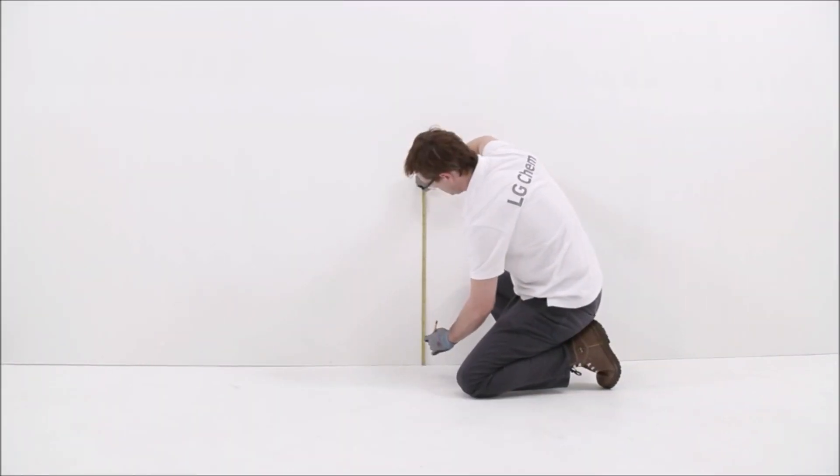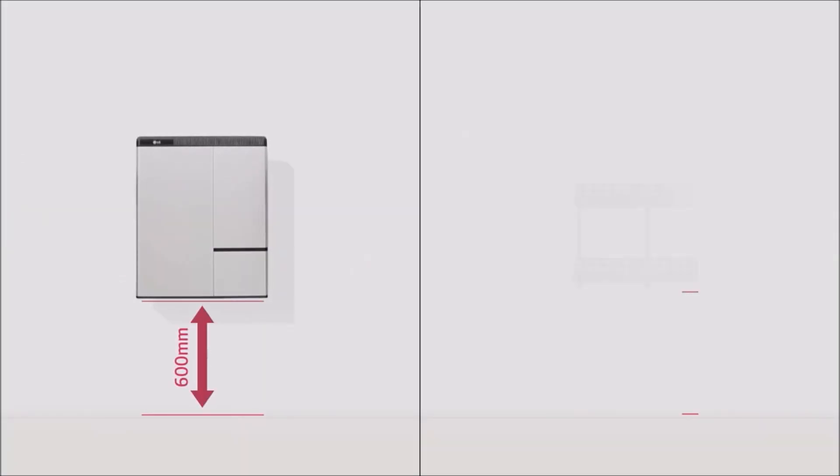First, the wall mounting bracket needs to be fixed. Please note that the Rezu 7H and Rezu 10H can only be wall mounted. For wall mounting bracket installation, make sure you have at least 720 millimeters above the ground.